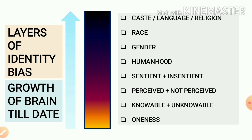Everything gets classified into sentient and insentient, or in general words, what we call living and non-living. Whatever responds to external stimuli, we call that living. And if something is insentient — that is, not able to respond to its external stimuli — we categorize it as a non-living thing. For example, a stone: if we push it, pull it, or hit it, it cannot respond. However, if you pull the tail of a dog, it barks at you, and if you pull harder, it may even bite you.